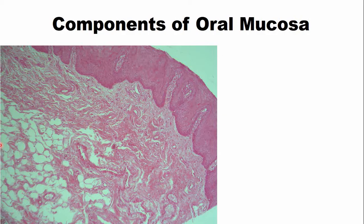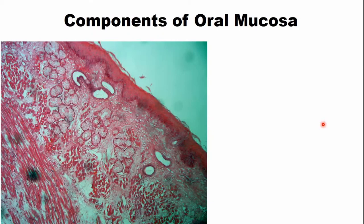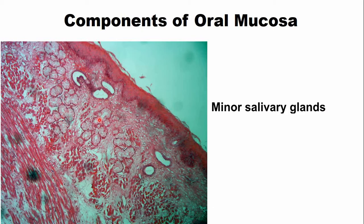In addition to fat cells, in some areas minor salivary glands are present in the connective tissue part. These are the minor salivary glands, and these are the blood vessels visible in the connective tissue.